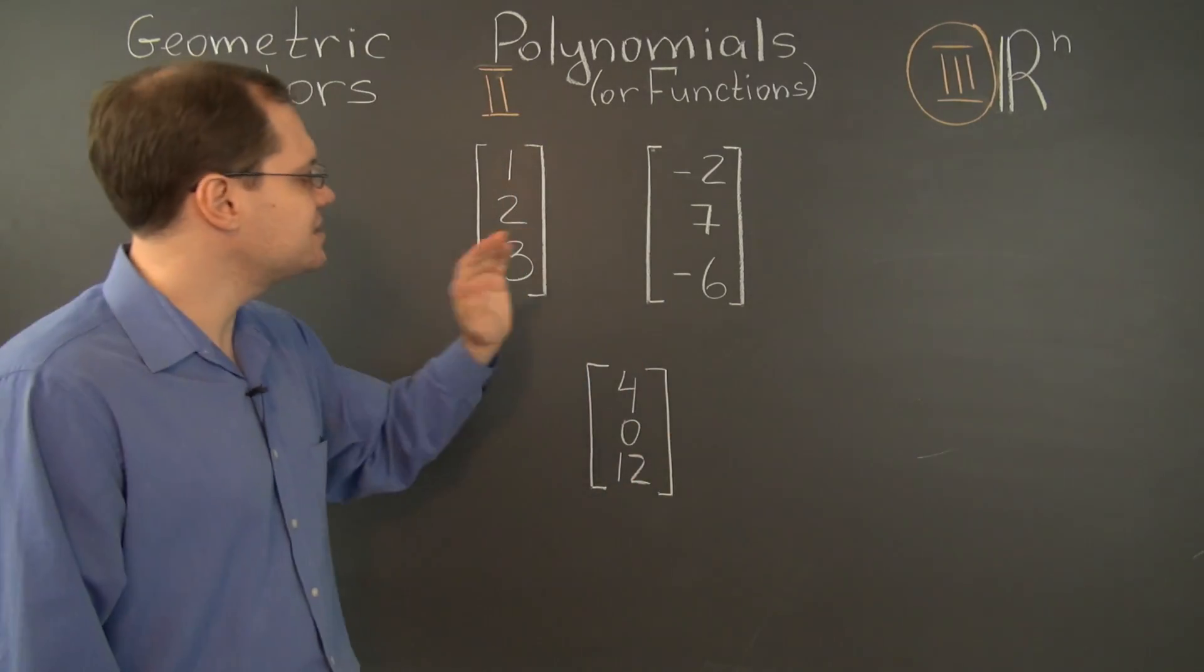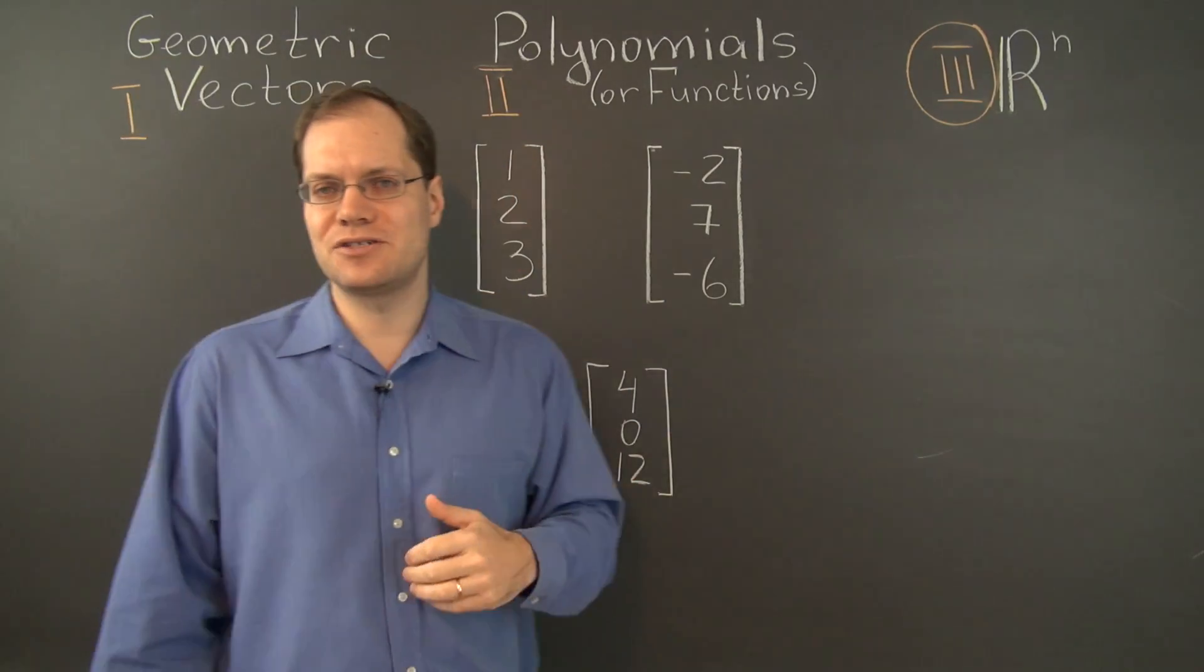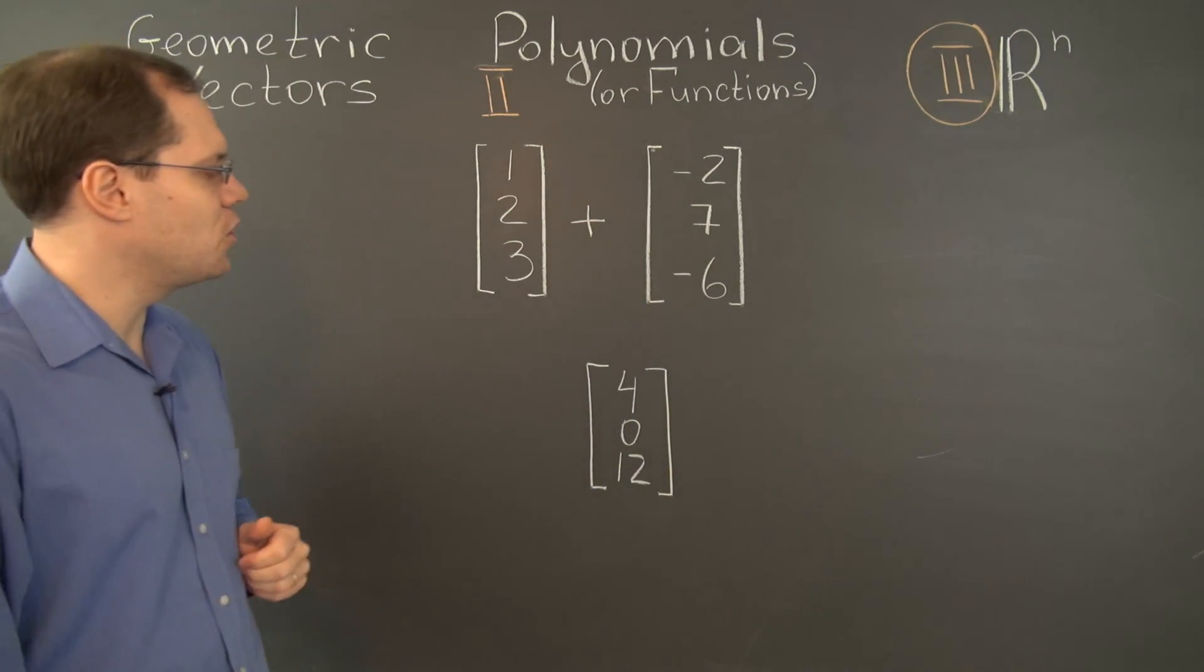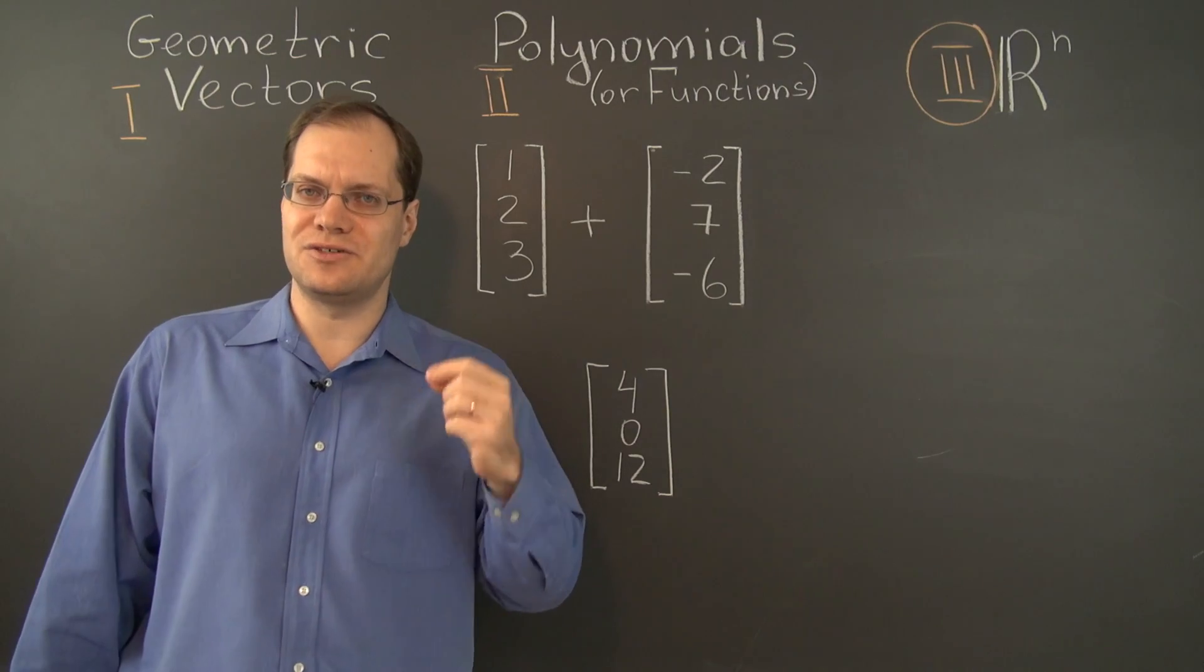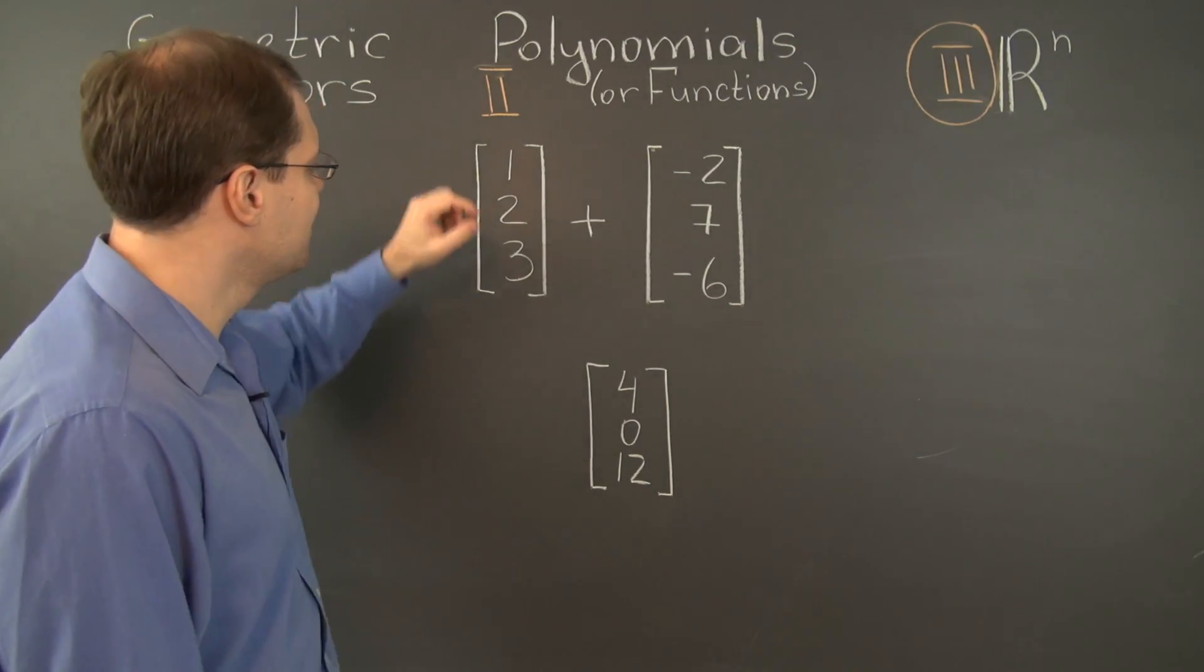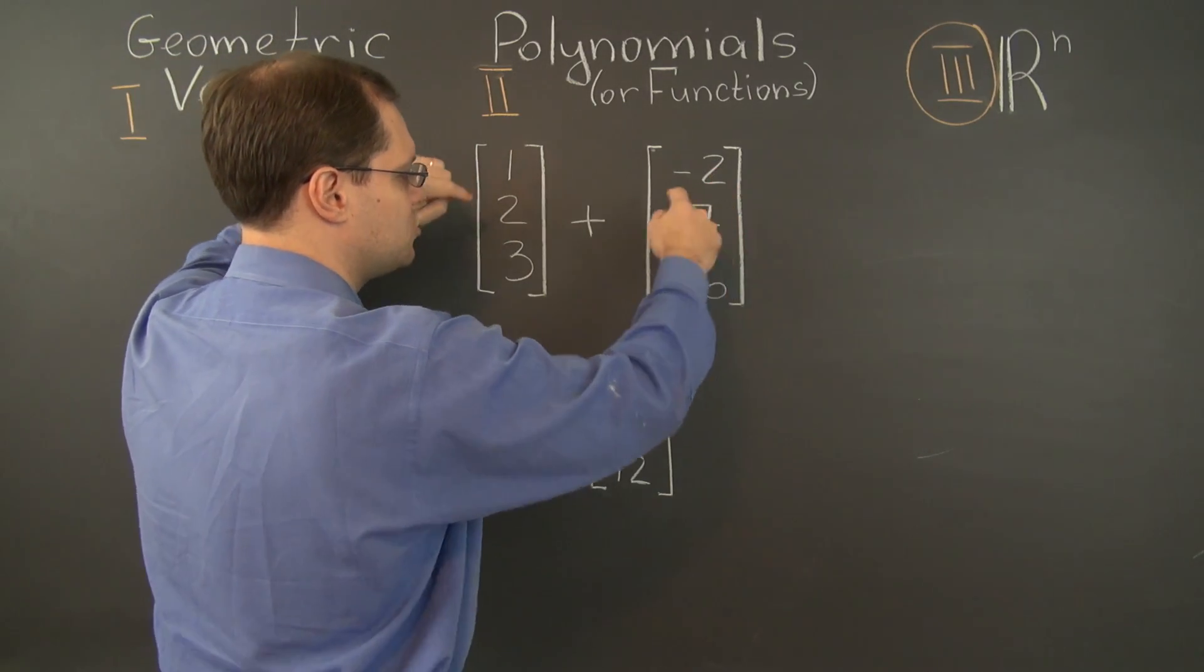First, let's figure out how to add these objects together. Once again, it couldn't be any more straightforward. When you add two elements of R^n together, all you really have to do is add them entry by entry. That's the definition.